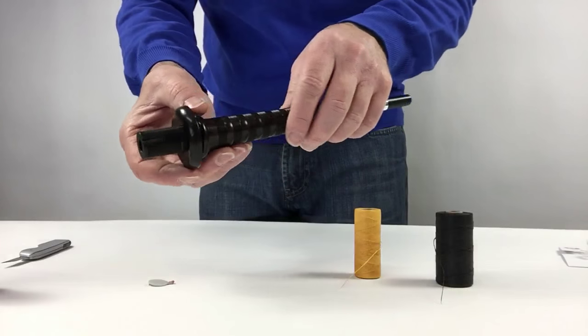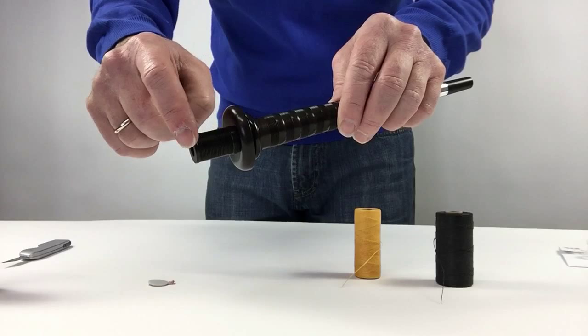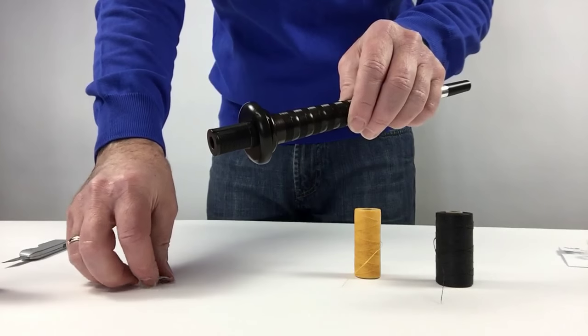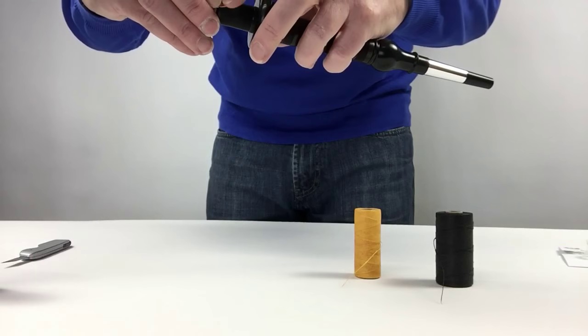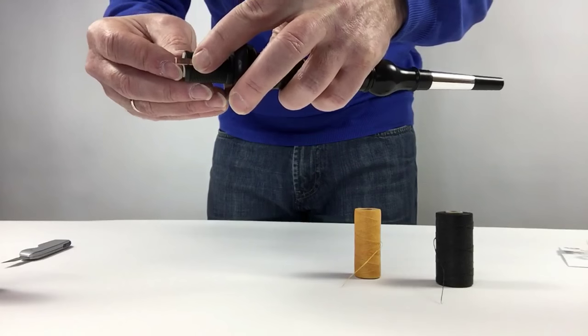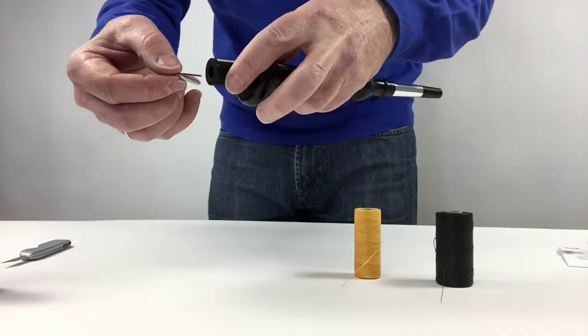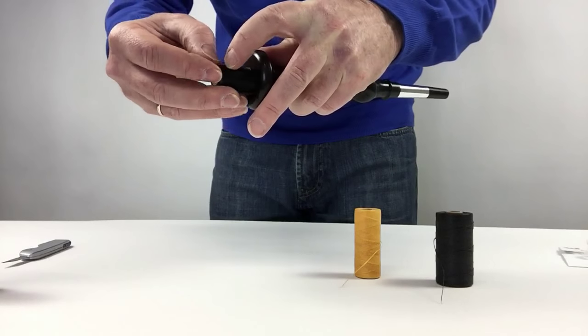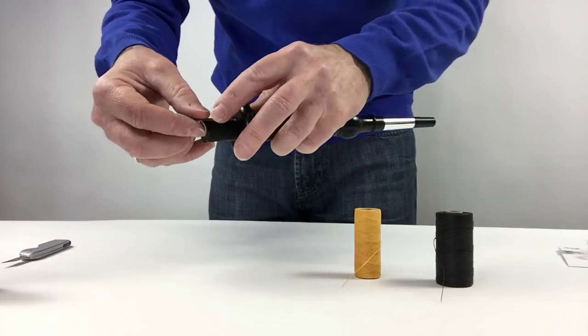Now, on your blowpipe, have a look. You may find a gouge here, which is ideal for fitting the valve. It just sits in there nicely. But some blowpipes don't have that, so don't worry. You'll just have to hold it down when you're hemping the valve down.